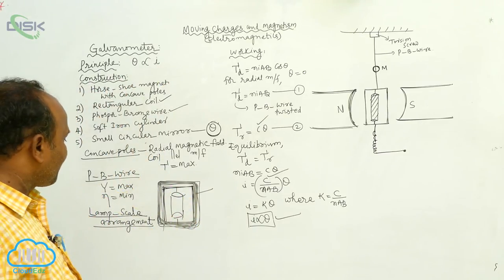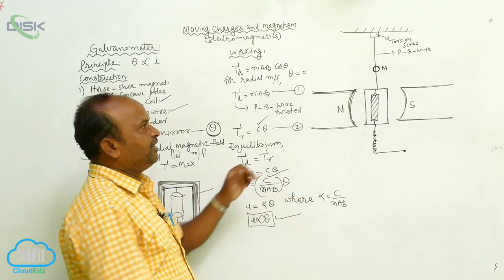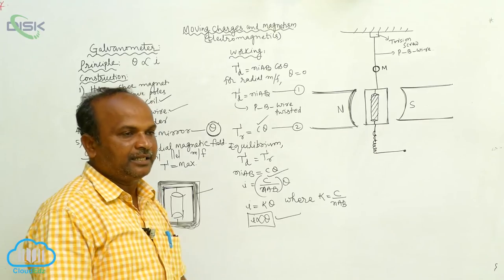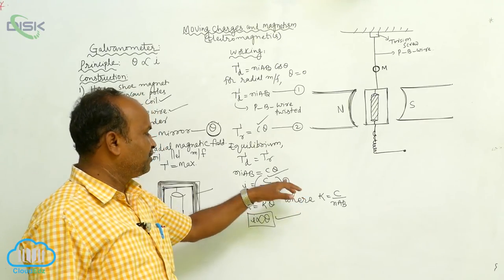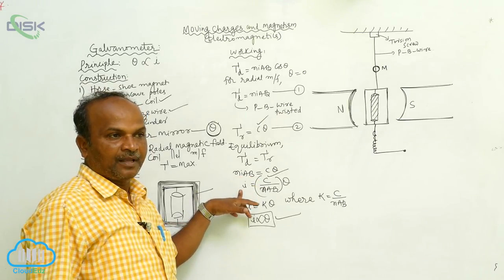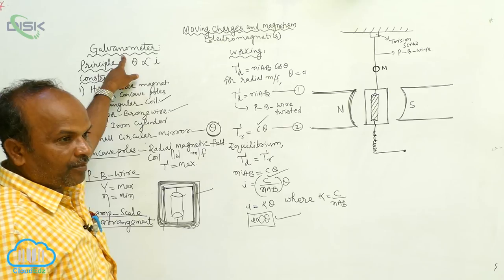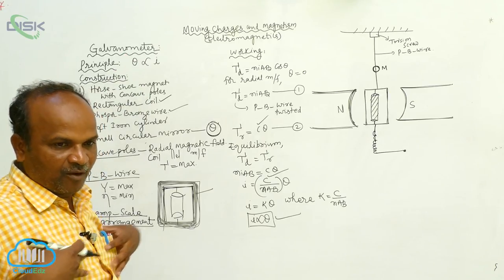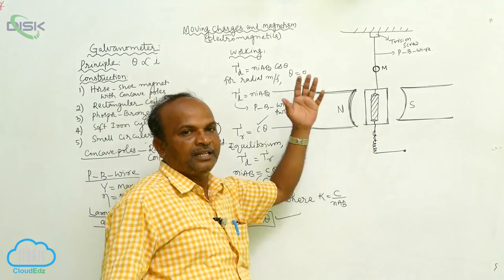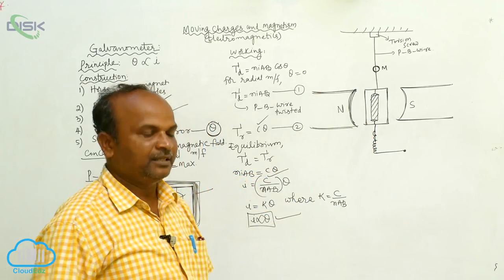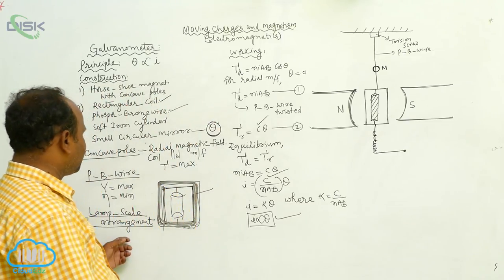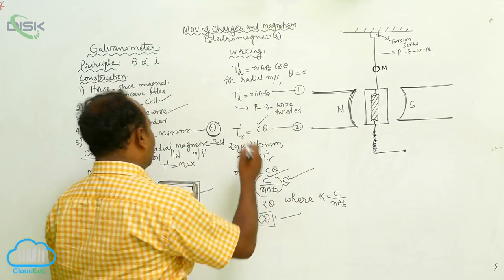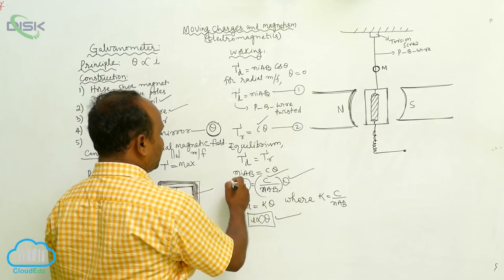To calculate the deflection θ, we use the circular mirror and the lamp and scale arrangement. That θ value is then substituted into the equation I = K·θ to get the current. Therefore, the galvanometer is a device used to measure current. As current passes through it, the coil deflects, the deflection is measured by the lamp and scale arrangement with the circular mirror, and substituting back gives the current value.